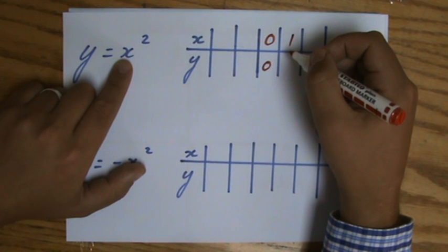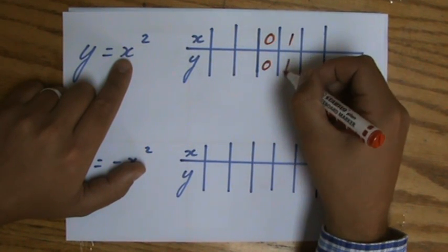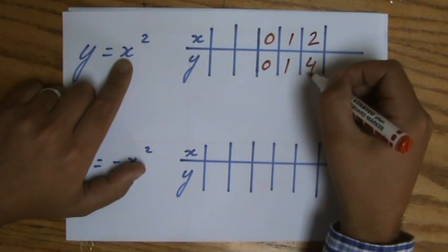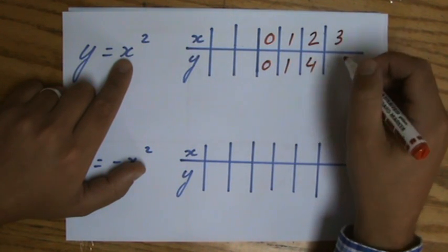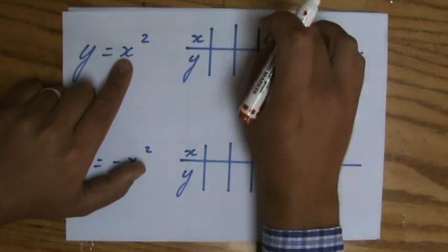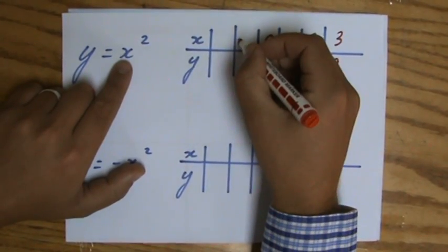When x is one, y is going to be one squared, which is one. When x is two, y is going to be two squared, which is four. When x is three, y is going to be three squared, which is nine. I deliberately started in the middle because on this side I'm going to do minus one.